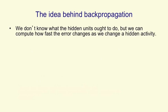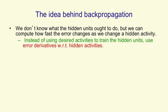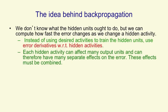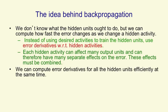The idea behind backpropagation is that we don't know what the hidden units ought to be doing — they're called hidden units because nobody's telling us what their states ought to be. But we can compute how fast the error changes as we change a hidden activity on a particular training case. Instead of using activities of hidden units as desired states, we use the error derivatives with respect to activities. Since each hidden unit can affect many different output units, it can have many different effects on the overall error, and these effects have to be combined — which we can do efficiently.